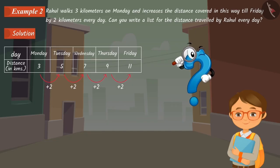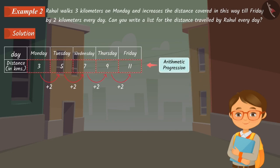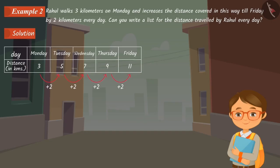What do you notice when you look at this list? This is also an arithmetic progression because each term except the first is obtained by adding a certain number to the previous term. The number of terms in this series is fixed; hence, this is a finite AP.